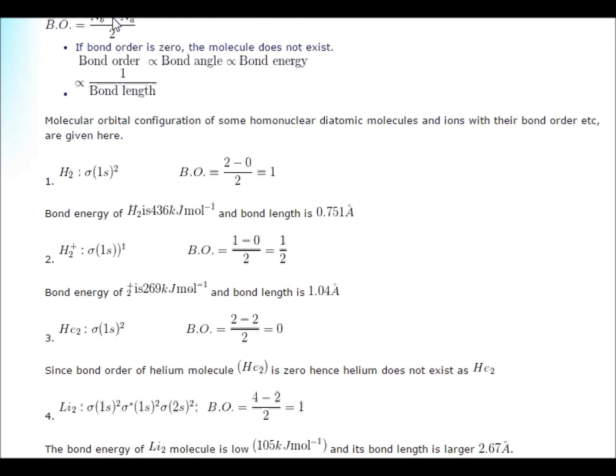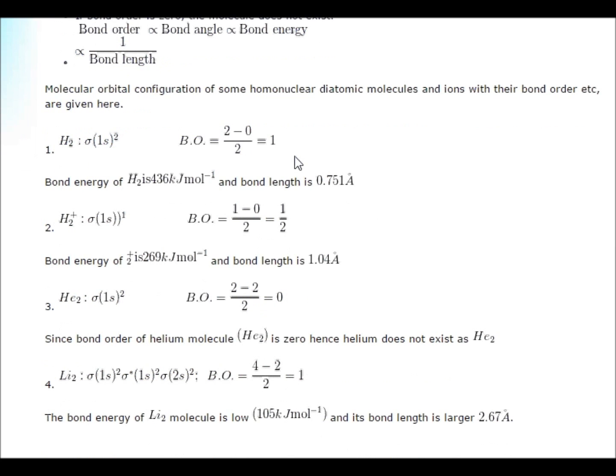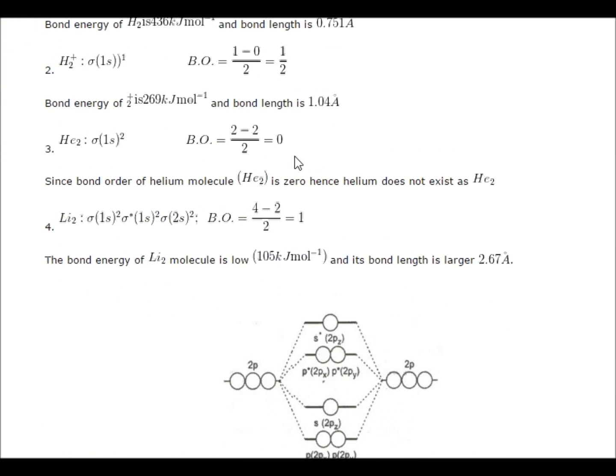We have formula where Nb represents bonding electrons and Na is anti-bonding electrons. For H2, it is 2 minus 0 divided by 2, which is 1. You can calculate using this formula also.